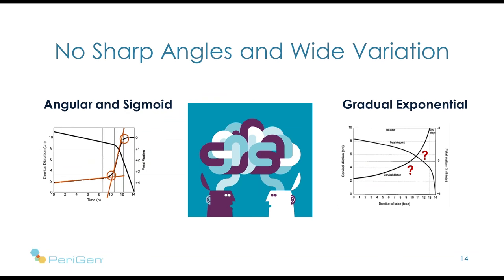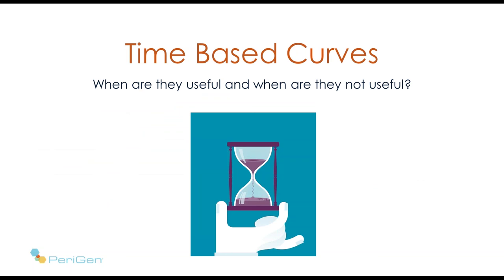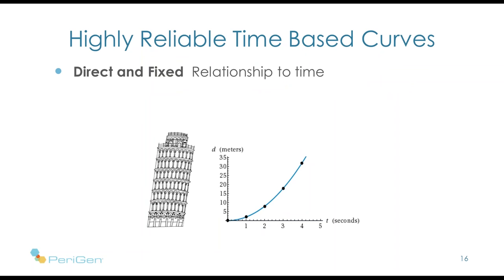There are examples where time-based curves are very useful and others where they're not. Here is a situation where a time-based curve is very helpful: it's helpful because there is a direct and fixed relationship between the process of interest — in this case, how far a ball will fall when dropped off the Leaning Tower of Pisa — and time. Because gravity has a fixed relationship to time, that's a very useful and precise time-based graph.